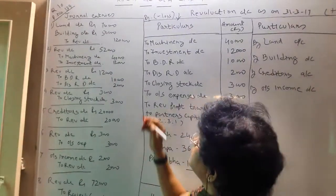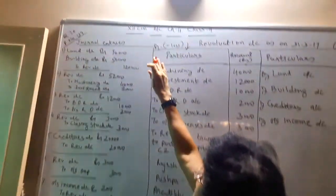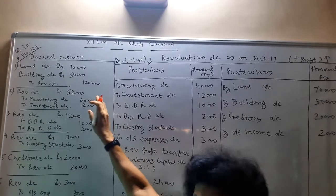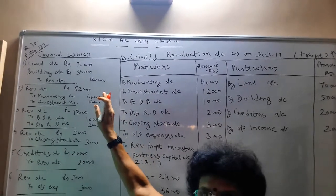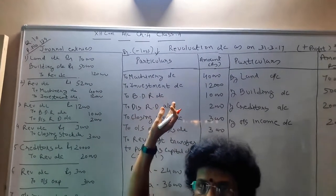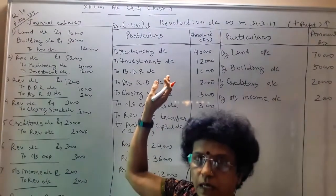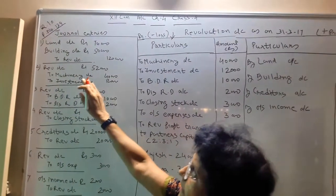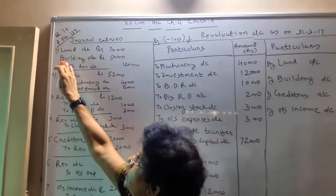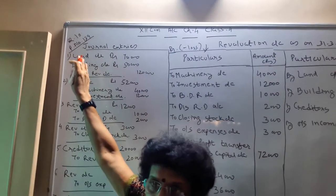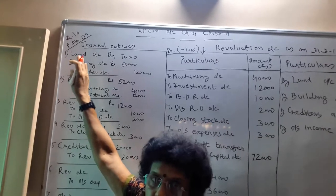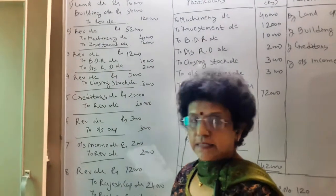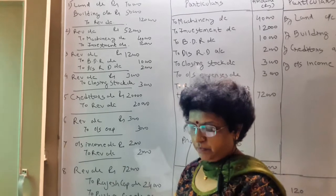Good morning students. Today in Class 4 we are learning journal entries and our revaluation account. We are doing question number 10. Open your textbook page number 139 and we are doing that particular example.